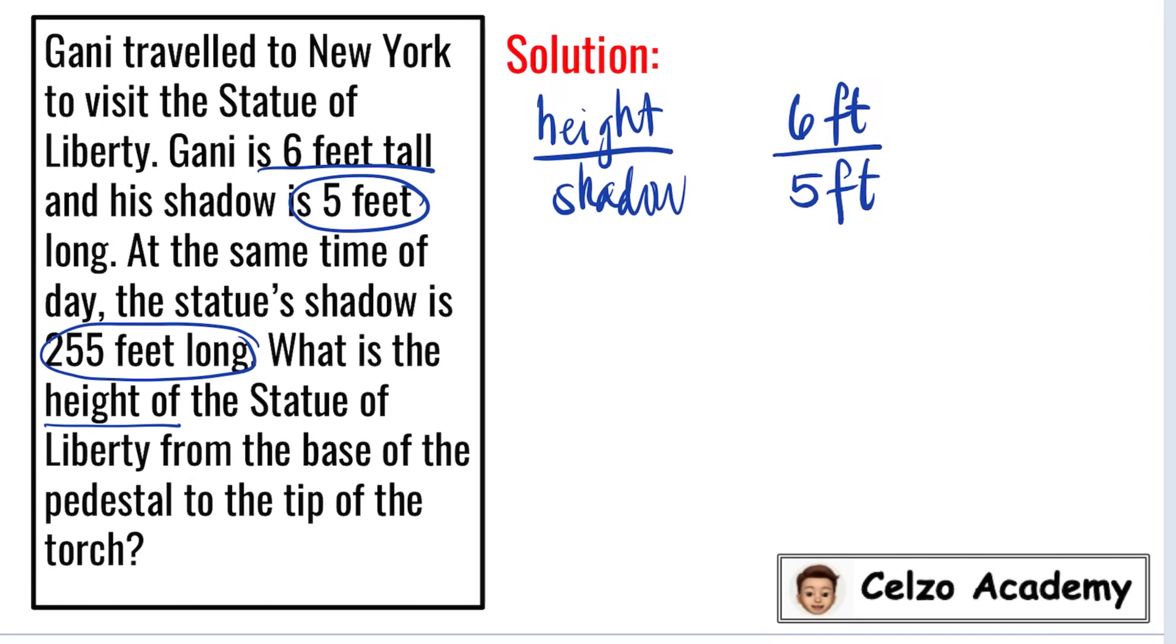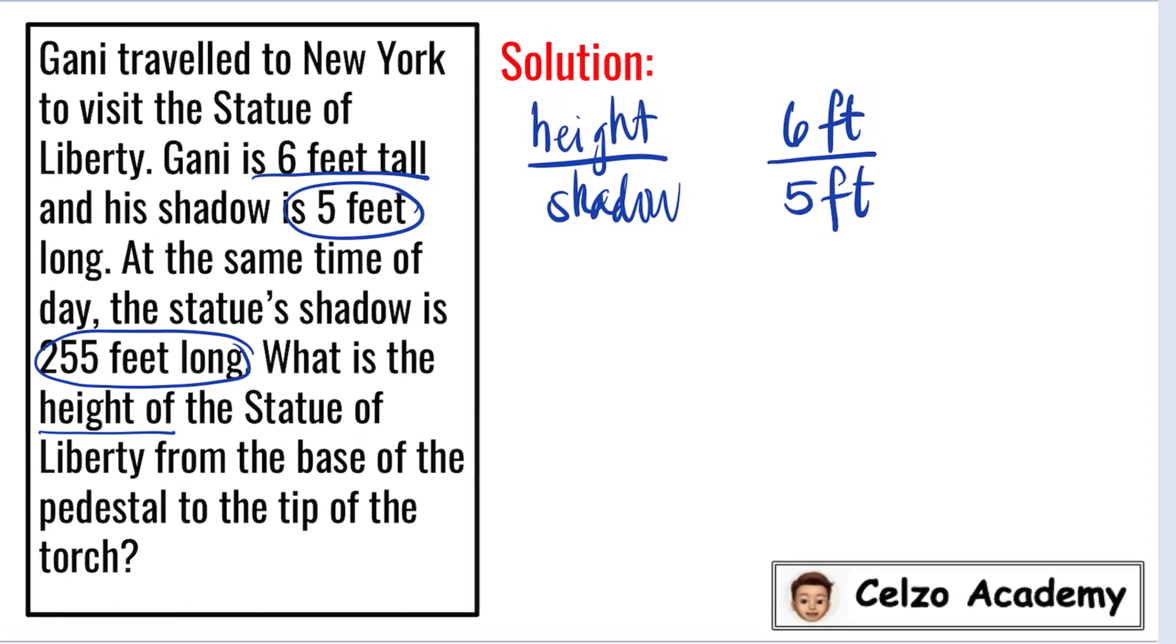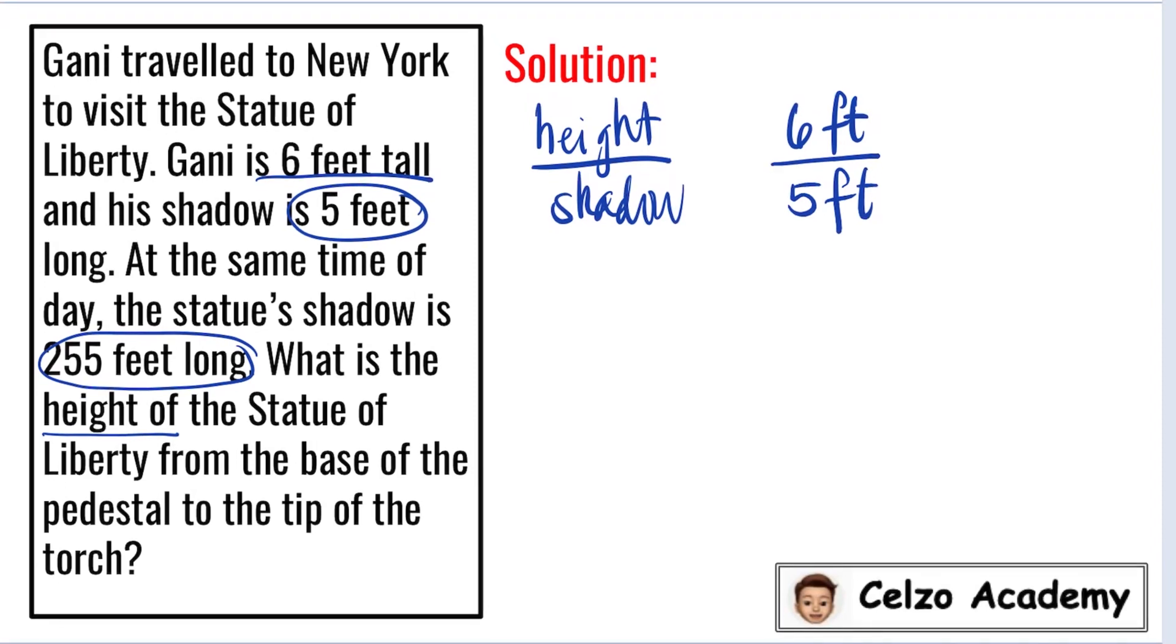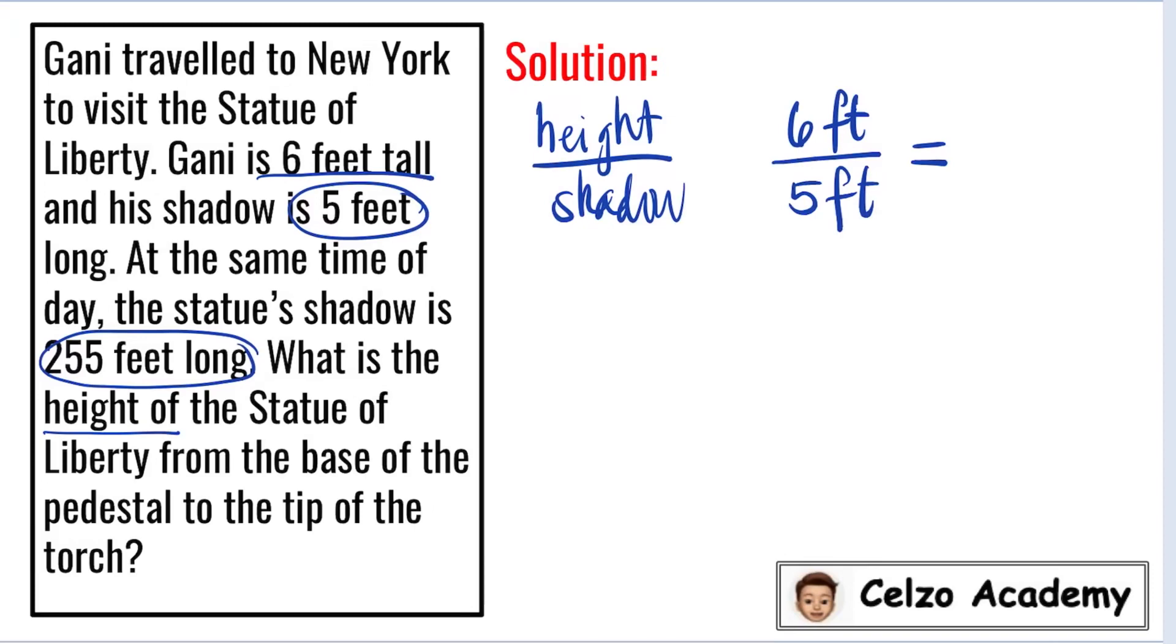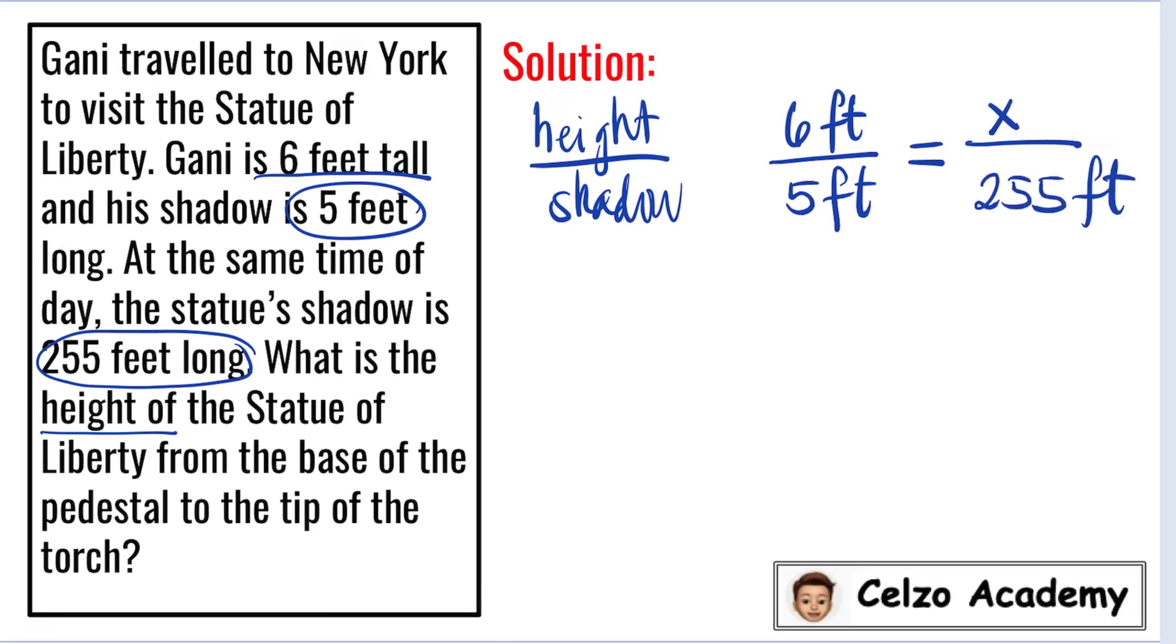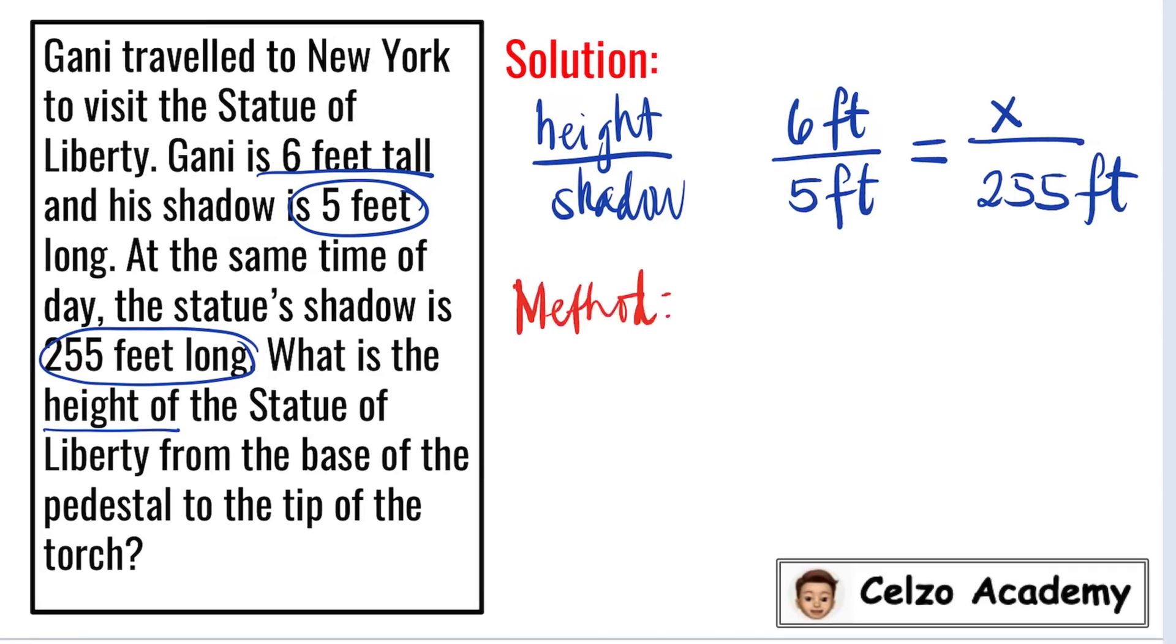Since the problem happened at the same time, the ratio of the height and the shadow of the person and the building should be equal. We don't know the height of the building, so we will represent that as X, and the shadow is 255 feet. I will show you two methods. For the first method,